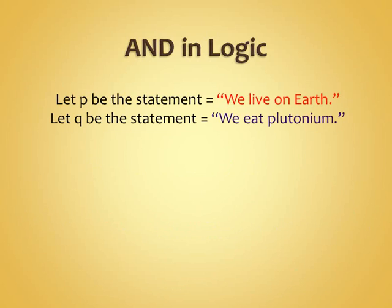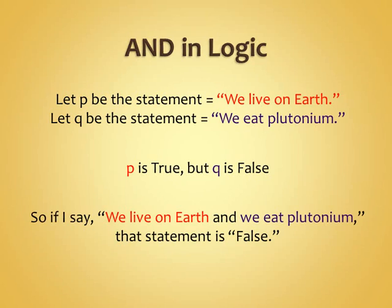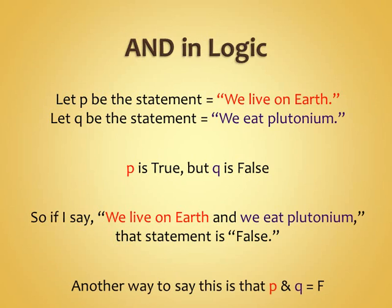If I say 'we live on Earth AND we eat plutonium,' since P is true but Q is false, then that is a false statement. So if I lie once using AND — I'm insisting that they absolutely both must be true, which is clearly not the case — so it's false. We say that P AND Q is false. True AND false would be false.